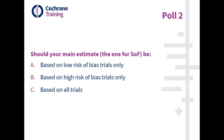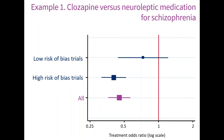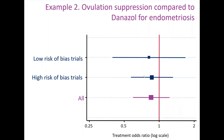There is no right answer in the sense that it's a difficult decision for all the reasons mentioned. Although there's no right answer whether to pick just low or all of them, it's generally advised not to pick your main analysis on the basis of seeing the results. Also it would be inconsistent — if two outcomes were in the same review and for one you picked just low risk of bias trials and for another you included everything, that would be wrong. These kinds of decisions should be defined in the protocol.